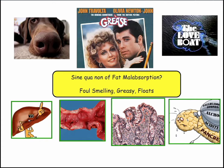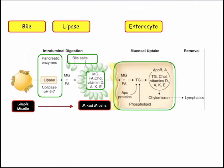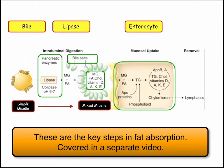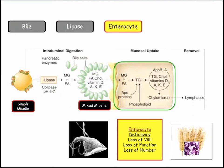Fat malabsorption: it's smelly, it's greasy, and it floats. The players are liver failure, bile salts, terminal ileum, enterocyte loss, and pancreas. For simple micelles and fat globules, you need lipase from the pancreas and bile salts. Now we're talking about enterocyte failure presenting with malabsorption for the first time. Loss of villi, loss of function, loss of number — that's what we're going to cover.